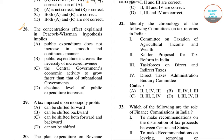In question number 28, the concentration effect explained by the Peacock-Wiseman hypothesis is given. Four options are given: public expenditure does not increase in a smooth and continuous manner; public expenditure increases the necessity of increased revenue; the central government's economic activity to grow faster than that of sub-national governments; and absolute level of public expenditure increases. The right answer is option C — the central government's economic activity to grow faster than that of sub-national governments.